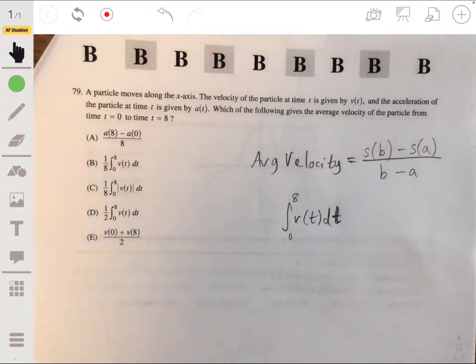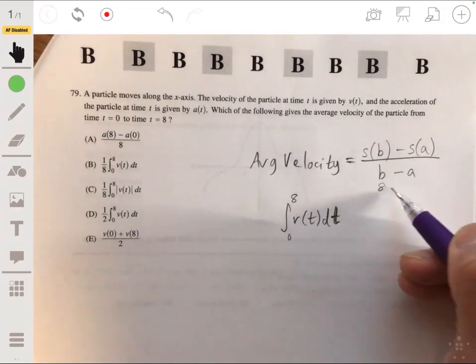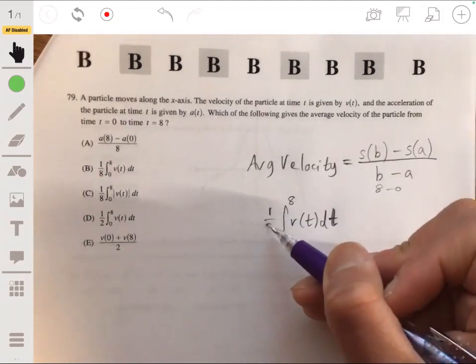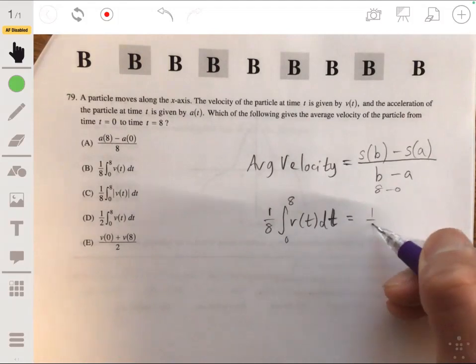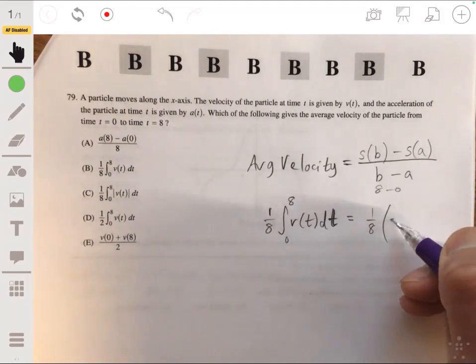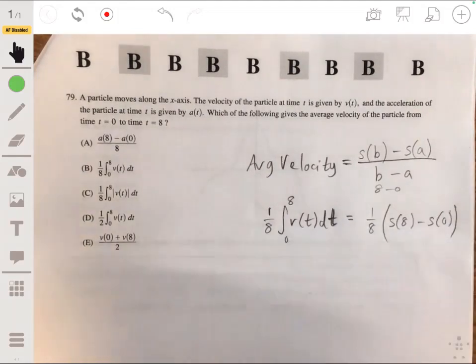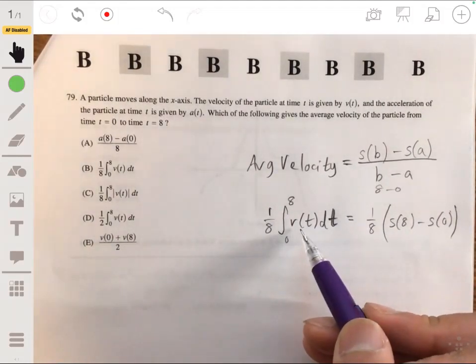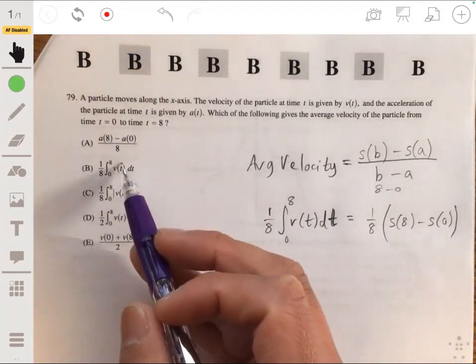So if you set up an integral from 0 to 8 of v(t) dt, and from there, since this is average, remember your c over b minus a, that will just be your 8 minus 0. So you're multiplying this whole thing by 1/8. Because this will leave us with 1/8 times s(8) minus s(0). So looking for the integral that matches this, the answer would be b.